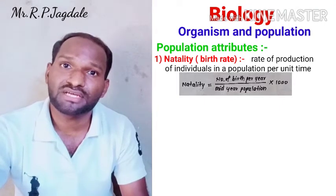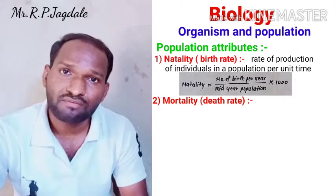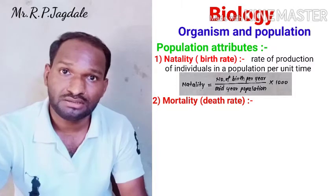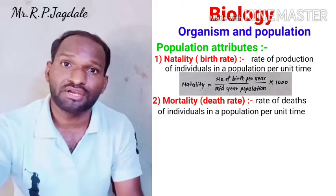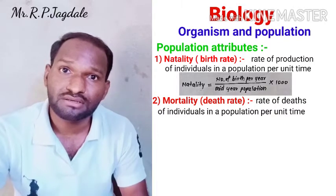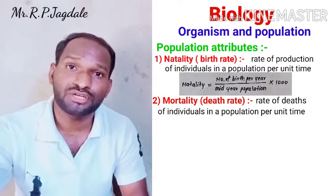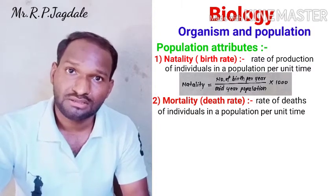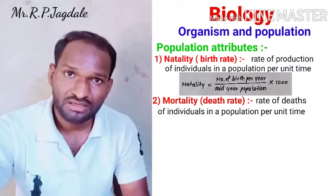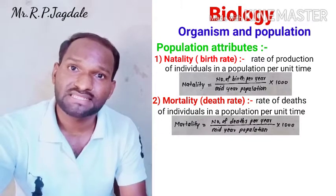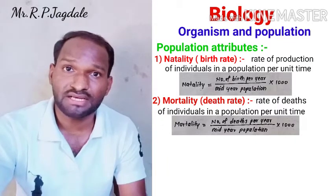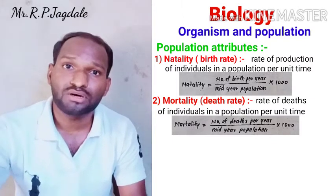Simultaneously, the second attribute is mortality, which we can call death rate. As natality is calculated, mortality is also calculated. It is the rate of deaths occurring in a population per unit time per unit area — that means in a population, in one year, how many individuals die. It is calculated as: Mortality = (Number of deaths per year / Mid-year population) × 1000. By this way we can calculate the natality and mortality, that means birth rate and death rate.